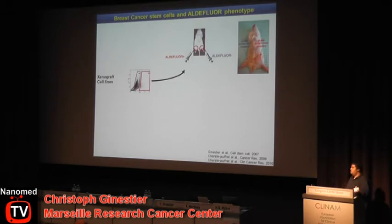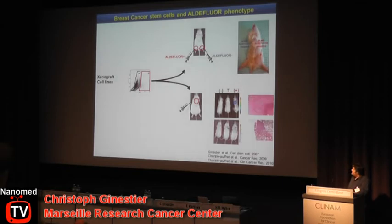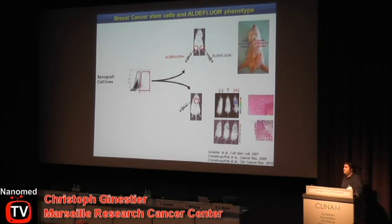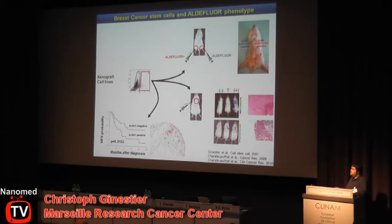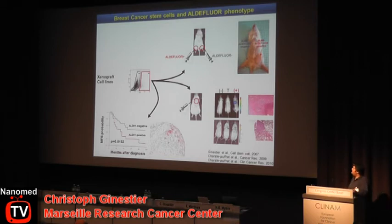Even when you inject only 500 ALDH-positive cells, you get a tumor. However, if you inject 50,000 ALDH-negative cells, no tumor grows. We also injected the sorted cell populations intracardially and followed metastasis formation by bioluminescence — only the ALDH-positive population was able to generate metastases in mice. Interestingly, we can also follow in situ the expression of ALDH1 using an antibody, and tumors with ALDH1-positive cells show worse prognosis than those without. All these experiments show that the ALDH-positive population contains the tumorigenic and metastatic population and can predict prognosis, confirming it contains the cancer stem cells.